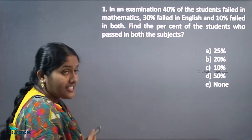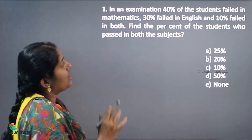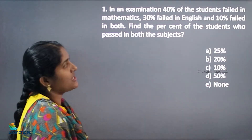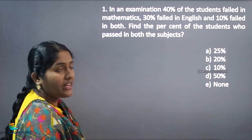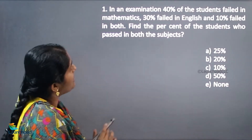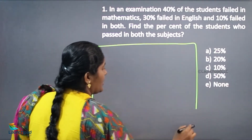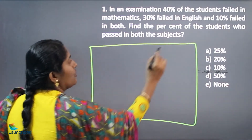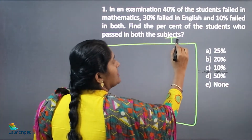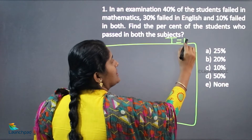Hello everyone. In this video we are going to see the next type of percentage questions. Let's see the question one by one. In an examination, 40 percentage of the students failed in mathematics. The total number of students is 100 percentage.